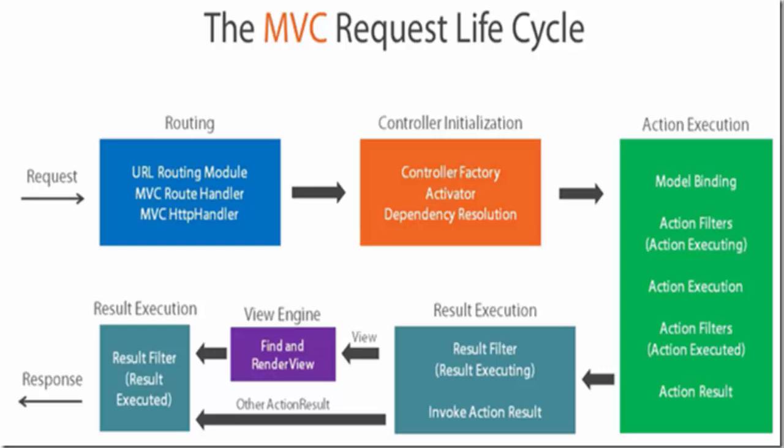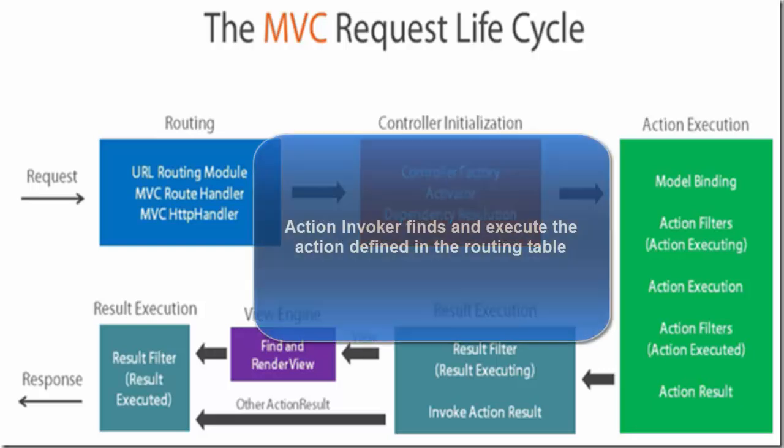This is also the place where dependency injection is performed, if the application has been designed to invoke a parameterized controller constructor to satisfy dependencies. After the controller instance is created, the next major step is to find and execute the corresponding action. We have a component called the action invoker, whose task is to find and execute the action defined in the routing table.